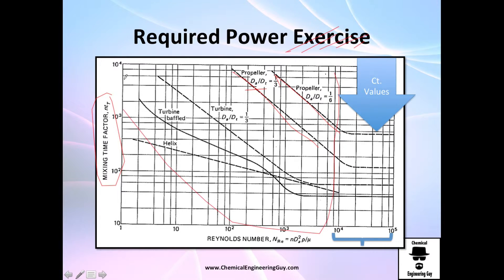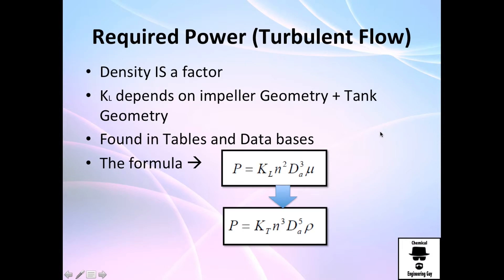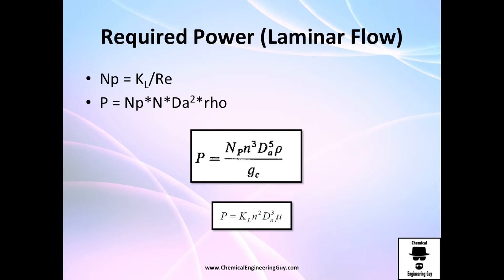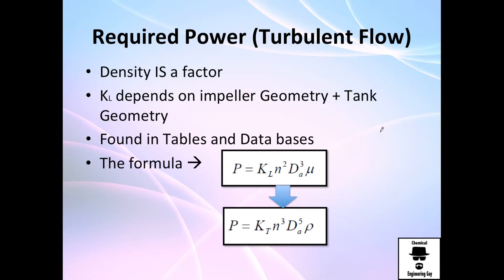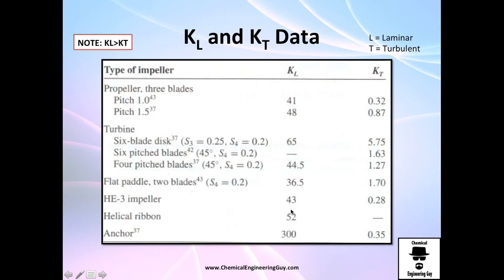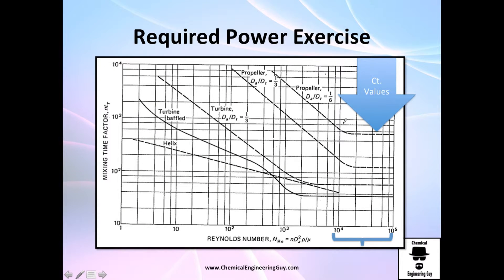For laminar flow we have plenty of changes. For turbulent flow we have constant values. This is for laminar so it's going to change a lot, and this is for turbulence. Once we have a very high value, we're going to find out that actually these values are constant.